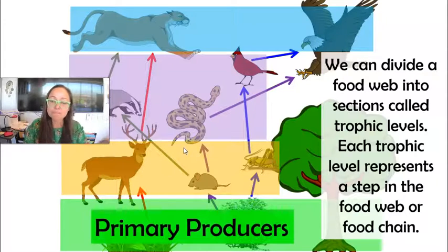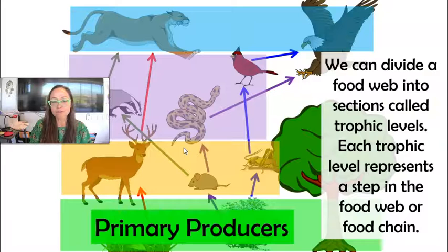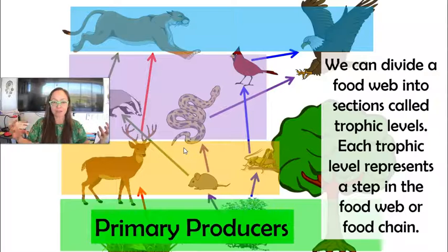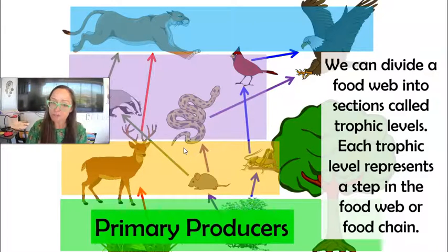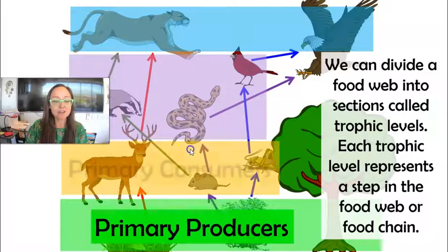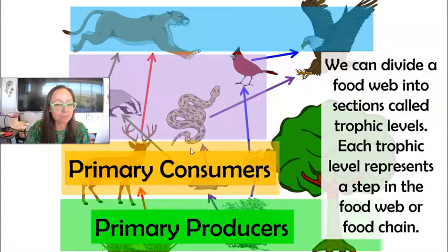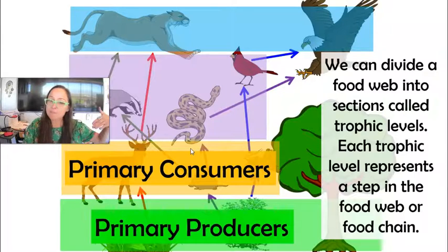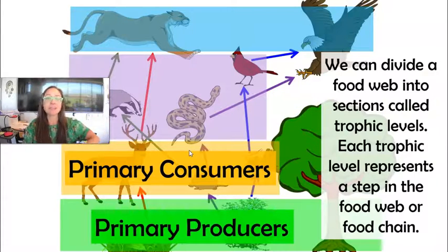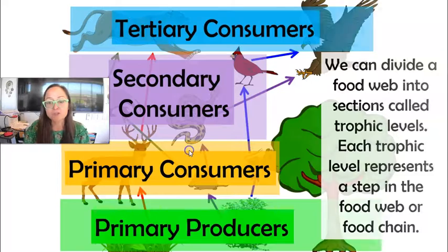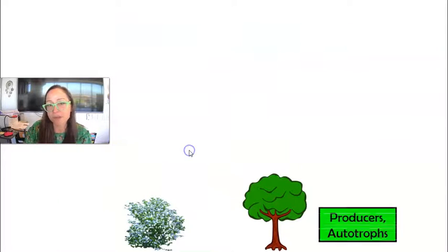At the bottom, we have our primary producers. Often when we talk about how much photosynthesis is done in an ecosystem, we can reference it as the primary productivity. You have your primary producers first, which are our autotrophs. Then you have primary consumers, which is the beginning of our heterotrophs. Primary consumers are generally your herbivores—they're the first ones to eat. Then you have your secondary consumers, and then your tertiary consumers. Your tertiary consumers are your top predators, basically.